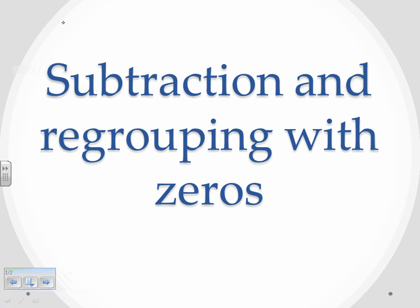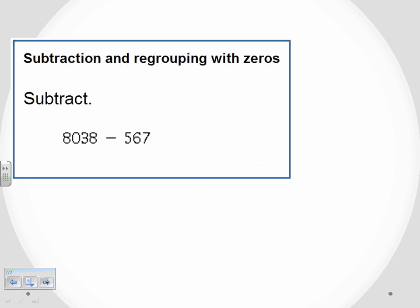Next we're taking a look at subtraction and regrouping with zeros. For our example we have subtract 8038 minus 567. Right off the bat, if you've seen the previous videos, this one is written differently - it's not written vertically, it's left to right. So I want to fix that. I'm going to rewrite this problem as 8038 minus 567.